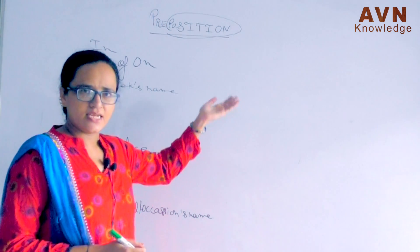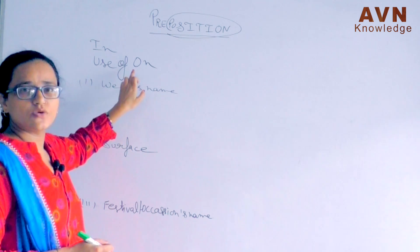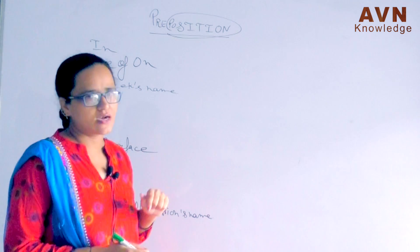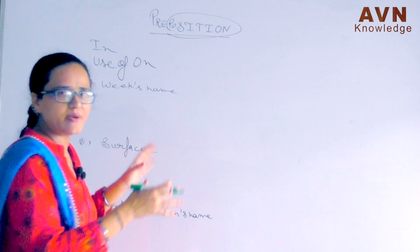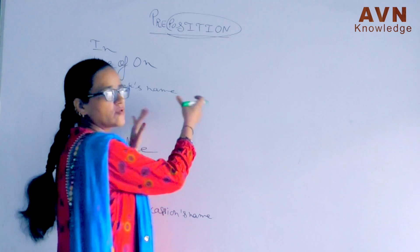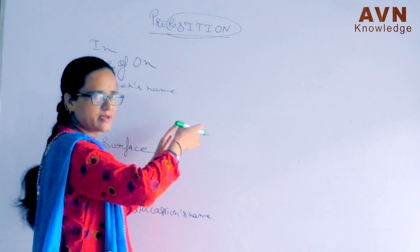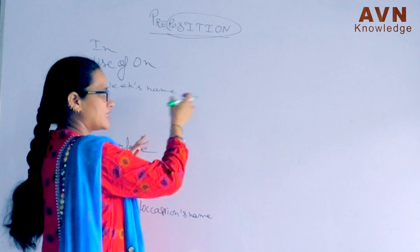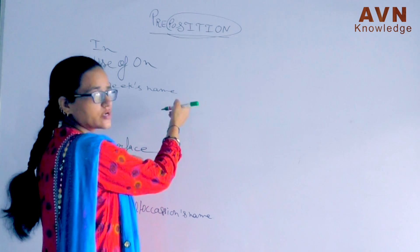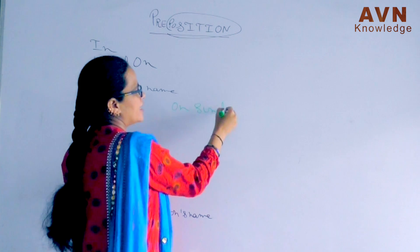Let's start the other examples of prepositions. Second preposition: use of 'on'. Where will 'on' be used? First, you will use 'on' with days of the week — Sunday, Monday. For example: 'On Sunday', 'On Monday'. You use 'on' with the name of a day.